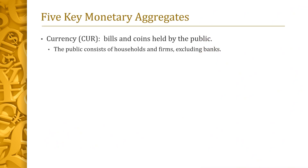We begin by defining five key monetary aggregates. The first is currency, abbreviated CUR. Currency is defined as bills and coins that are held by the public — by households and by firms other than banks.